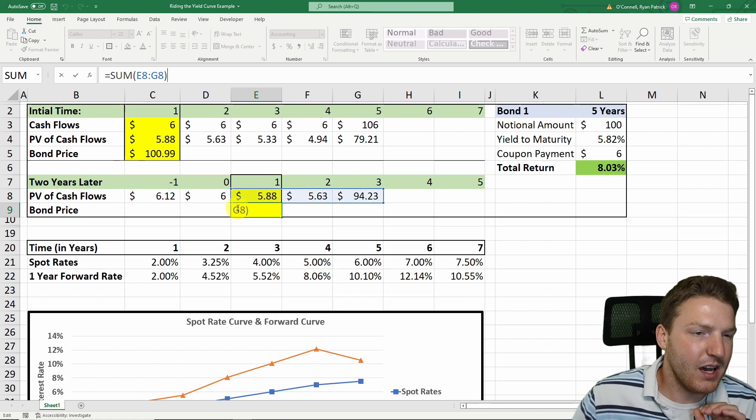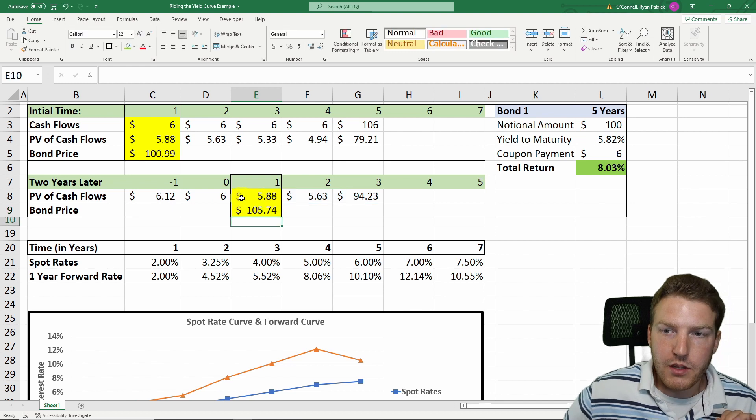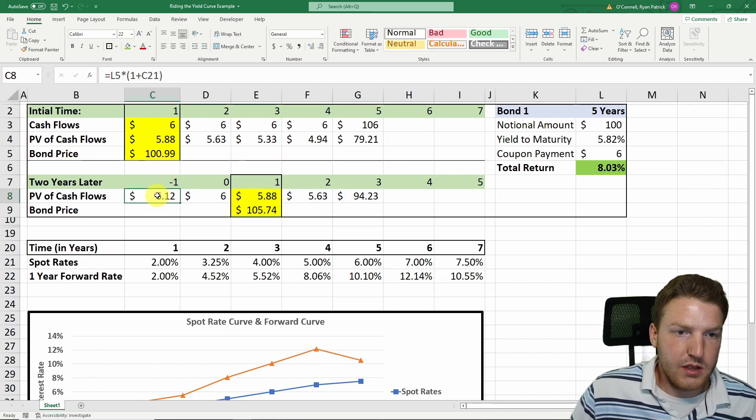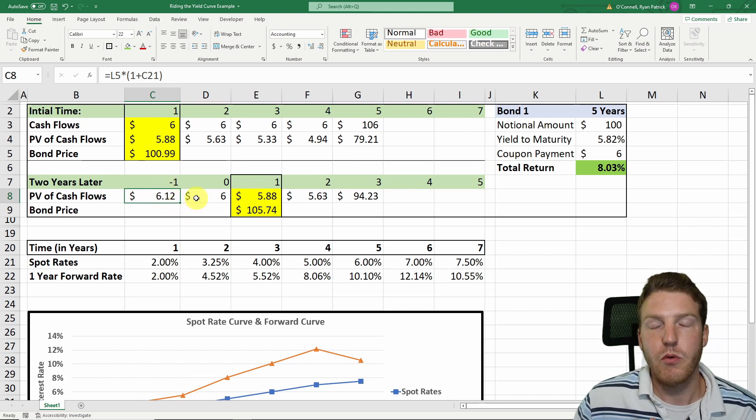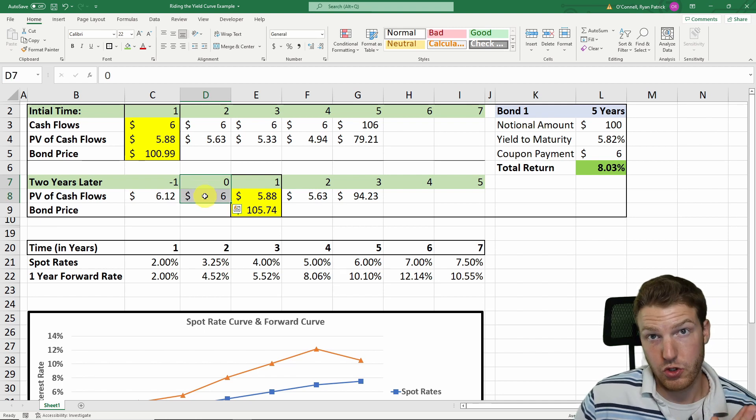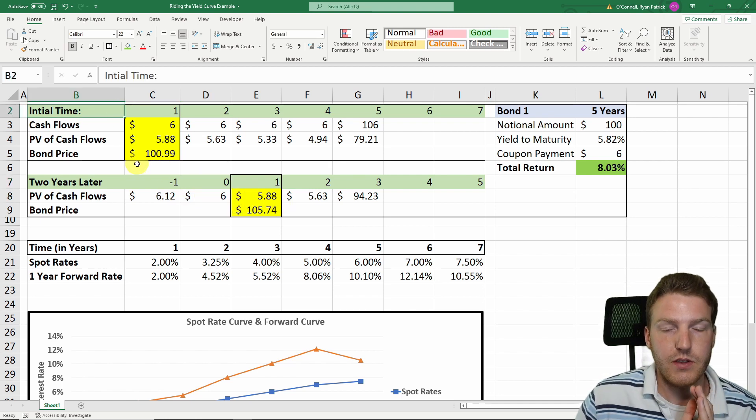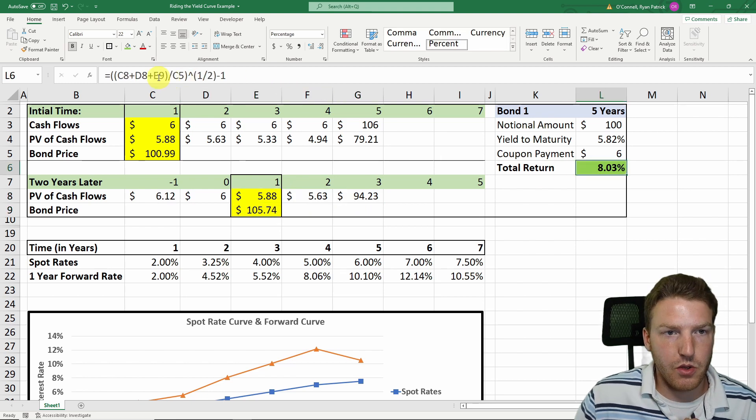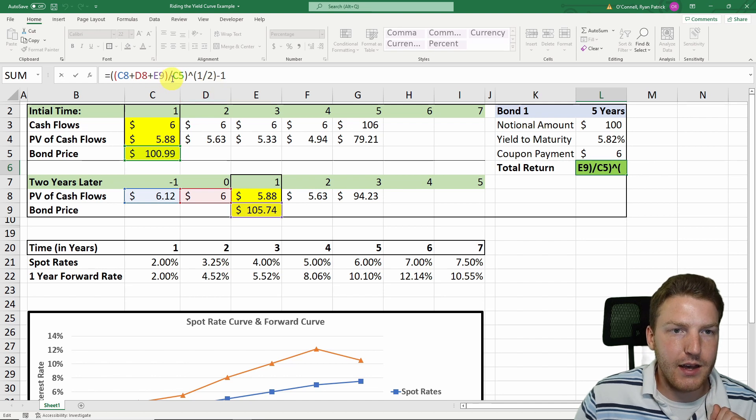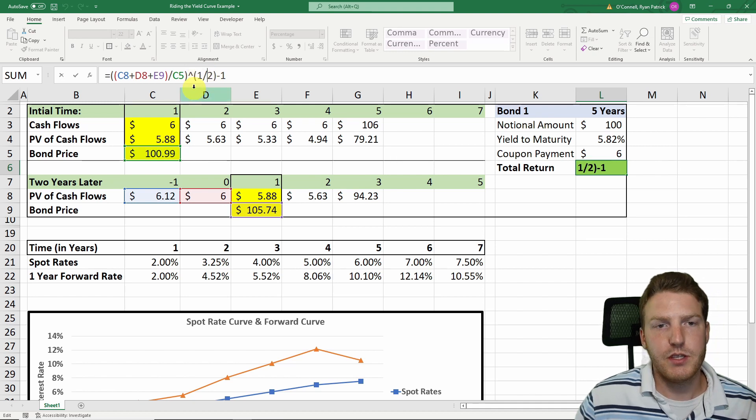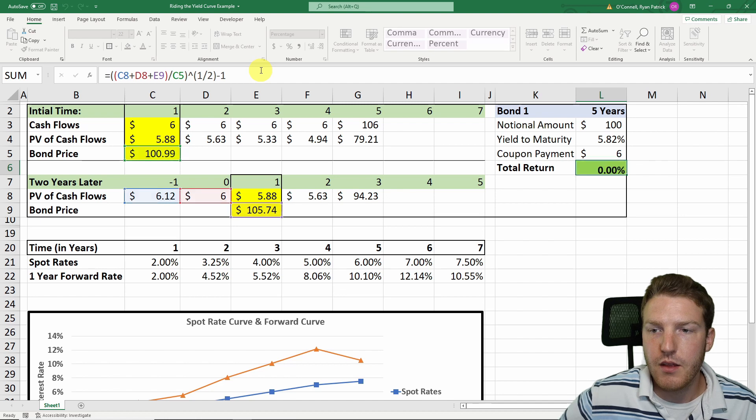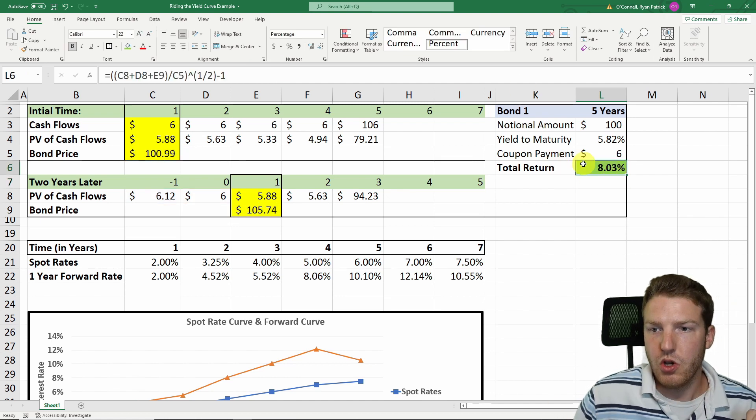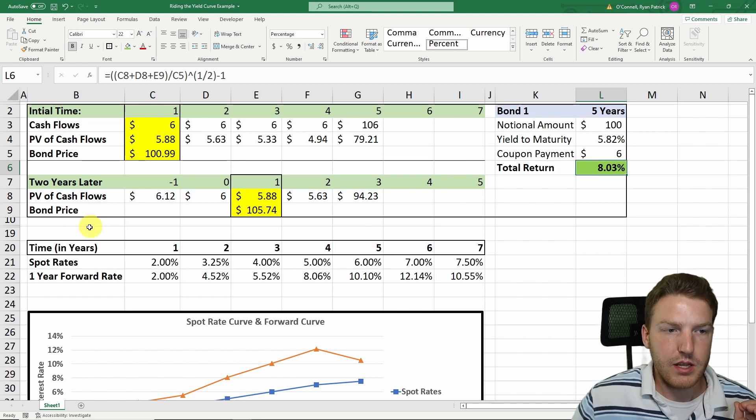That's how much someone would have to pay us to buy this bond from us. Our total return on this bond involves the initial coupon that we received plus the reinvestment we received on that coupon, the coupon we received today which is actually two years later than the initial start of this investment, and then the three payments discounted back to today that we will receive in the future. That is the numerator here. Then we divide by cell C5, which was the initial price we had to pay for the bond. We take it to the exponent of 0.5, which is basically the square root because this is two years of interest that we had earned. We find that this whole investment earned us a total return of 8.03%.